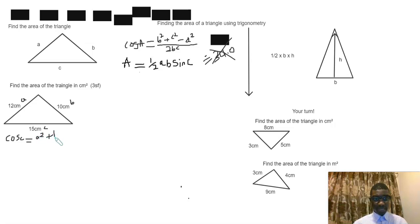Plus b², so this is c, this is a² sign—minus c² over 2ab.